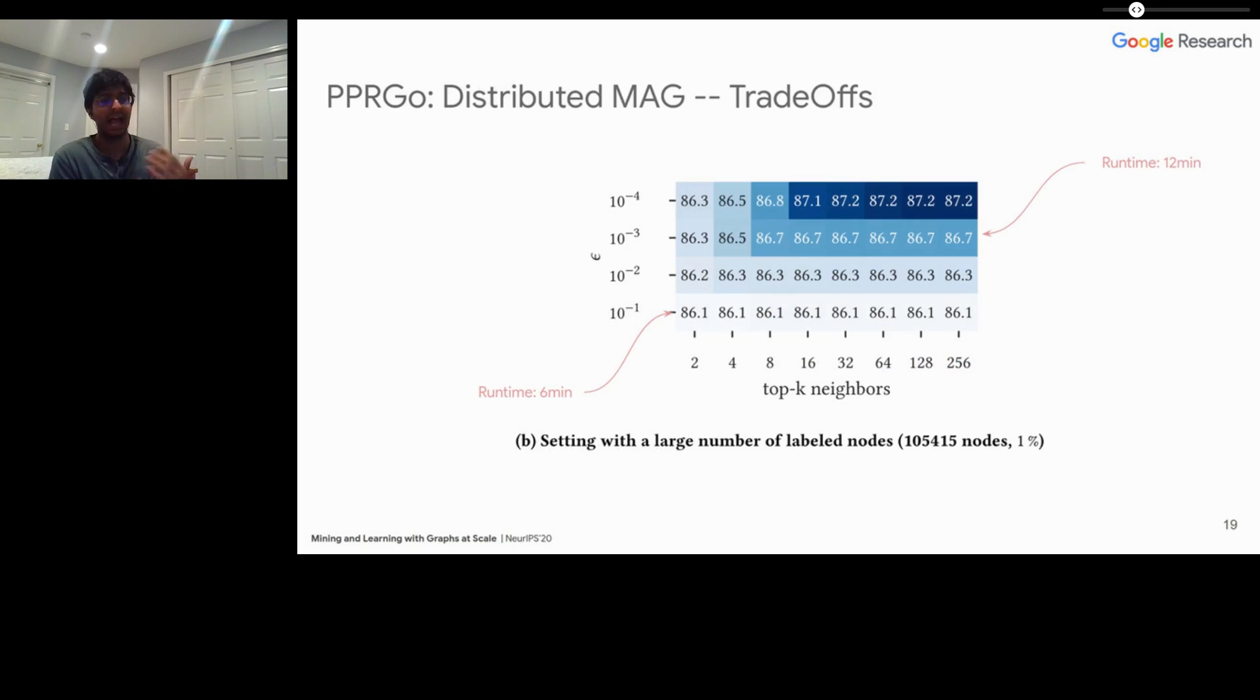We care a lot about the tradeoffs. What is the accuracy versus runtime tradeoff? We also care a lot about the distributed setting because that's actually the setting that we're going to be using PPR Go most often. We can see here that the tradeoff is actually really not that bad. When you have a kind of a low top K and a low epsilon, which corresponds to a fairly low number of runtime cycles, we have a runtime of six minutes in a distributed setting compared to a runtime of 12 minutes in kind of one of the more expensive settings. So you can very smoothly trade off the runtime versus accuracy here for PPR Go, which is actually really nice because it means that we have these dials that allow us to say, how much accuracy do I actually want to trade off for what percent of runtime?